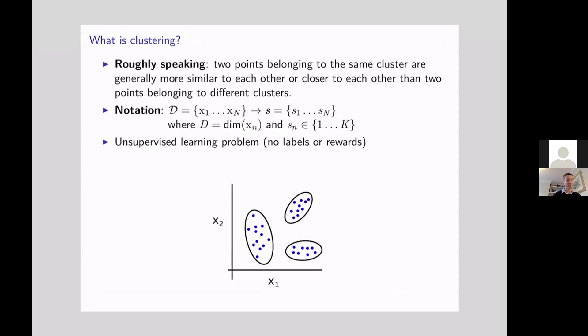notice that this is unsupervised now. So at training time, in this particular setup, we just get data, we just get x's, we don't get any s's at training time. The algorithm itself has to figure out based on notions of how similar data points are and how dissimilar they are, which one should be clustered together, rather than basing its outputs on user defined labels. It's an unsupervised learning problem, no labels or rewards.